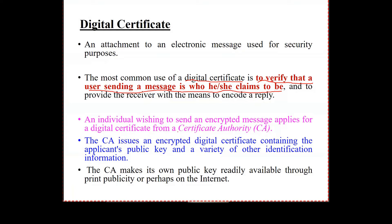CA stands for Certificate Authority. When you have your birth certificate, where do you get it? From the civil department — that's the only place you get a birth certificate. Same thing with the digital certificate: you get it from a place called Certificate Authority. Not anyone can give you a certificate. This is the authority that generates digital certificates.